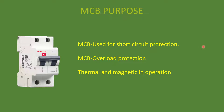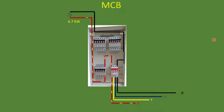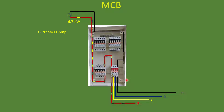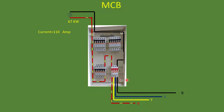Let's see a scenario. A three-phase load of 6.7 kilowatts is connected to an MCB. Using the equation P = √3 × V × I × cos φ, we can find the current — the current will be 11 amps, so we select a 15-amp MCB. If the load suddenly increases to 67 kilowatts, the current will rise to 110 amps. This situation is called an overload situation. In this scenario the MCB will trip, coming to the off position, and there will be no current flow in the circuit. This type of protection is called overload protection.